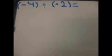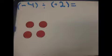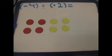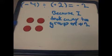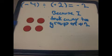In this equation, we are taking away groups of positive 2 until we are left with negative 4. Since we have to be left with negative 4, we must first add negative 4. Since we added negative 4, we must also add 0 pairs — positive 4. Now we have to take away groups of positive 2. It equals negative 2 because I took away 2 groups of positive 2.